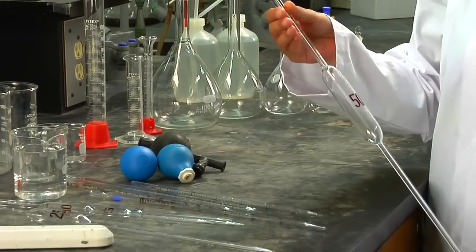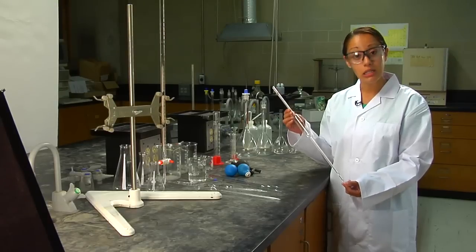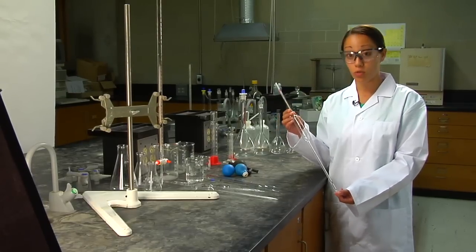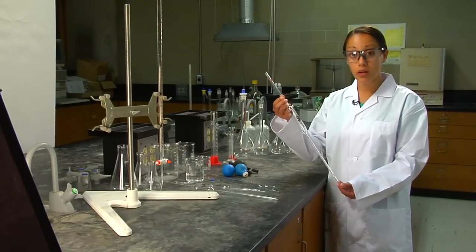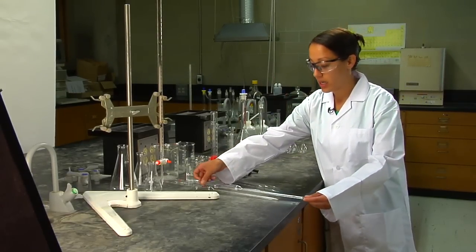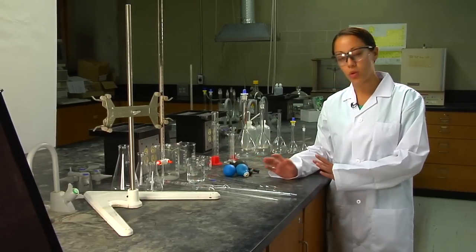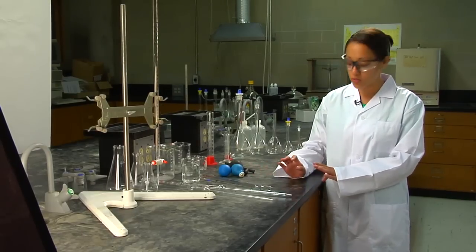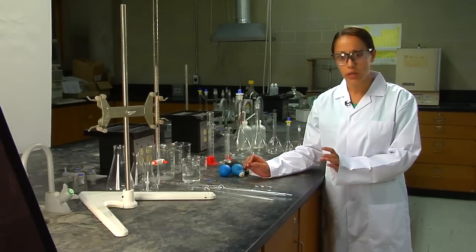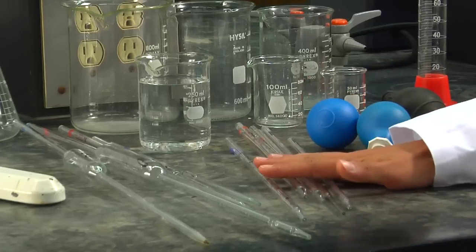The best pipette you can use for making dilutions or standard samples is your transfer pipette because it has one mark and it's very accurate. If you need to measure smaller volumes or more awkward volumes like 2 mL or 5 mL or even 4.5 mL, you also have measuring pipettes.